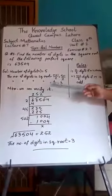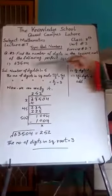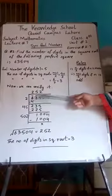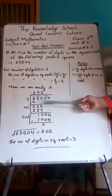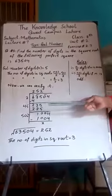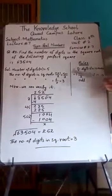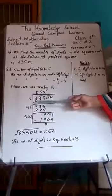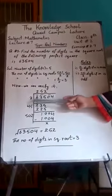Now we can verify it. Verification ke liyeh hameh is given number ka square root find karena. Square root find karne ke liyeh, we will write this 63504 under the sign of the square root. Student same way, ham pair karke, 04 ka pair laya, 35 ka, or 6 akela raha jayega.